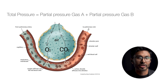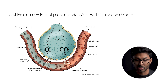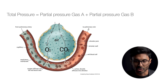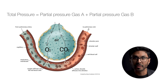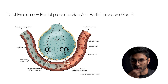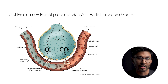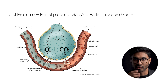Partial pressure is key in oxygen transport. The partial pressure of oxygen in the lungs drives its diffusion into the blood, enabling gas exchange. It's also what drives carbon dioxide out of the blood and into the lungs so we can breathe it out. Pause here if you need a moment to study the diagram on screen.